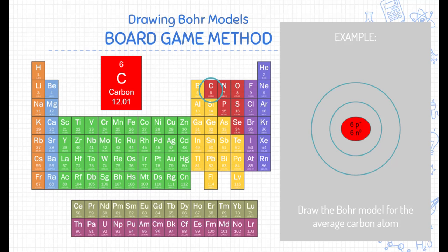All right, so how do we put the electrons in there? This neutral carbon atom has six electrons. This is where the board game method comes into play. In a typical board game, we always start at space one. The first electron goes on the first energy level. That's the very top row of the periodic table. The second electron also goes on the first energy level. Now we're done with the first energy level.